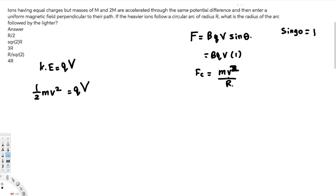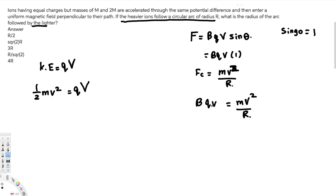The question asks: if the heavier ion follows a circle of radius R, what is the radius for the lighter ion? We need to find a relationship between mass and radius. Setting the magnetic force equal to the centripetal force: BQv equals mv squared over R. Bringing R over and simplifying, we get R equals mv over BQ.